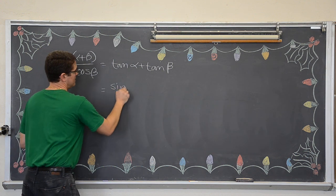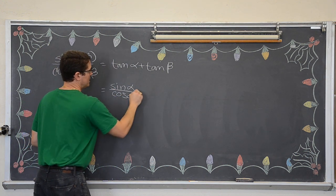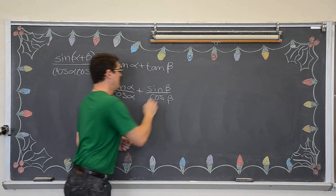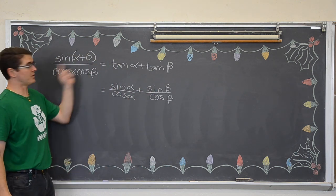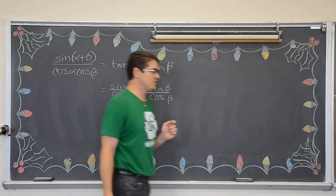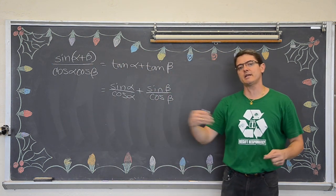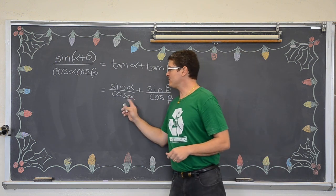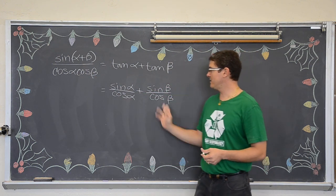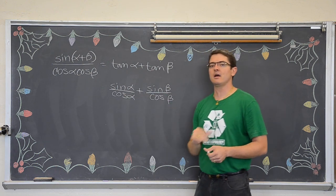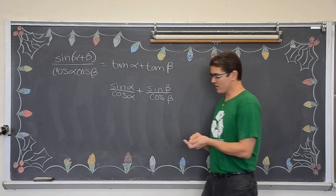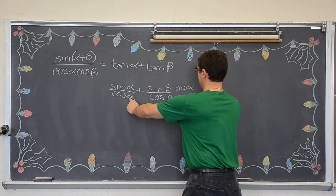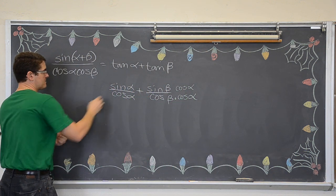The tangent of alpha is going to be sine of alpha over cosine alpha, plus the tangent of beta which is sine beta over cosine beta. Here we have two terms and over here we only have one. Remember, as you are doing these identities you need to keep looking at the goal — look at the other side and make sure you know where you are going. If I only have two terms and I only want one, I need common denominators.